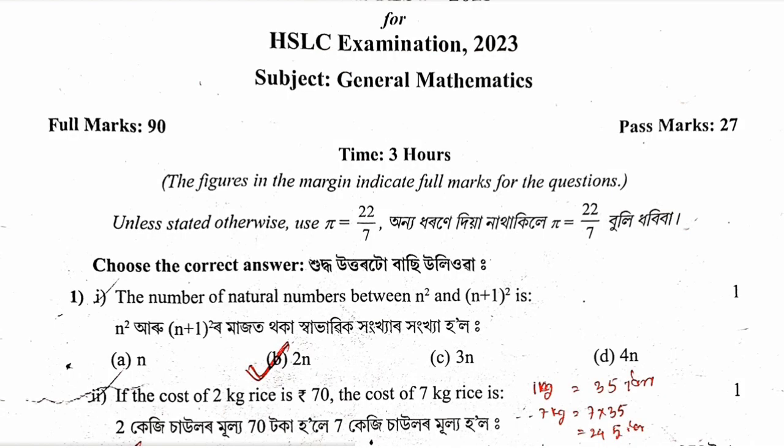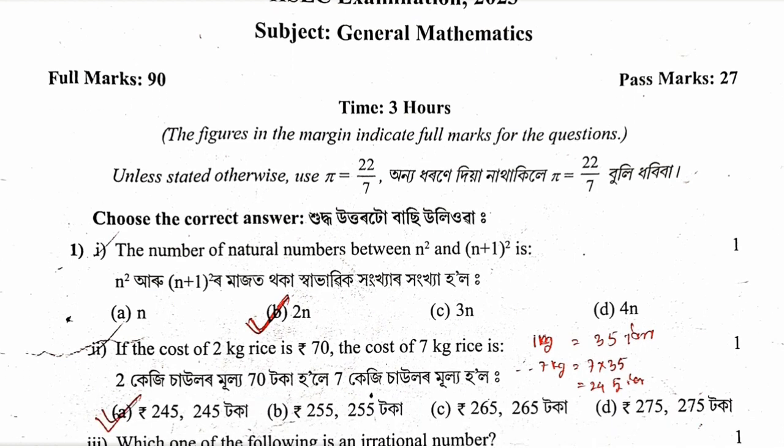The first question is: the number of natural numbers between n square and n plus 1 whole square. We need to discuss whether n square and n plus 1 whole square are the same or different, and they are not the same.